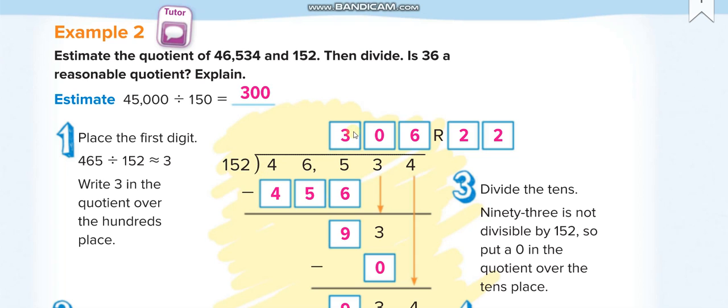152 times 3 is 456, which is close to and less than the first three digits. When you minus you get 9.